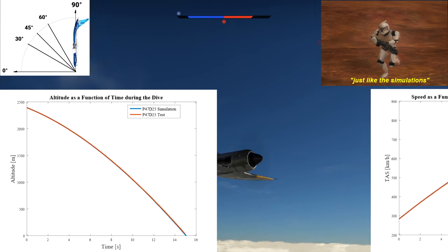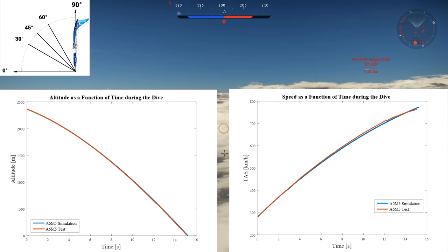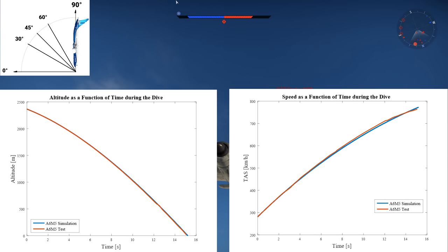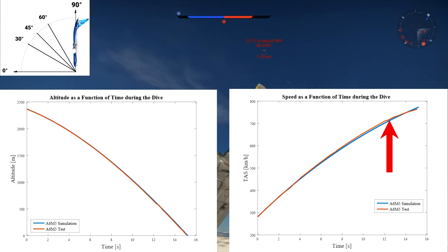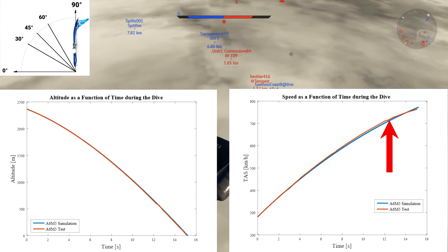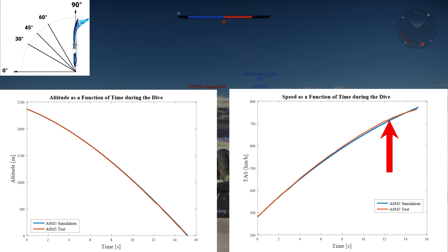The speed as a function of time graph on the right also shows nearly identical results for the P-47, which means that the simulation is accurate. The same can be said for the A6M-5 model as we compare the simulation to the test data. The kinks in the test curve are due to freezes and the wing rip near 700 kilometers per hour. All in all, the simulations are a good representation of reality in War Thunder.